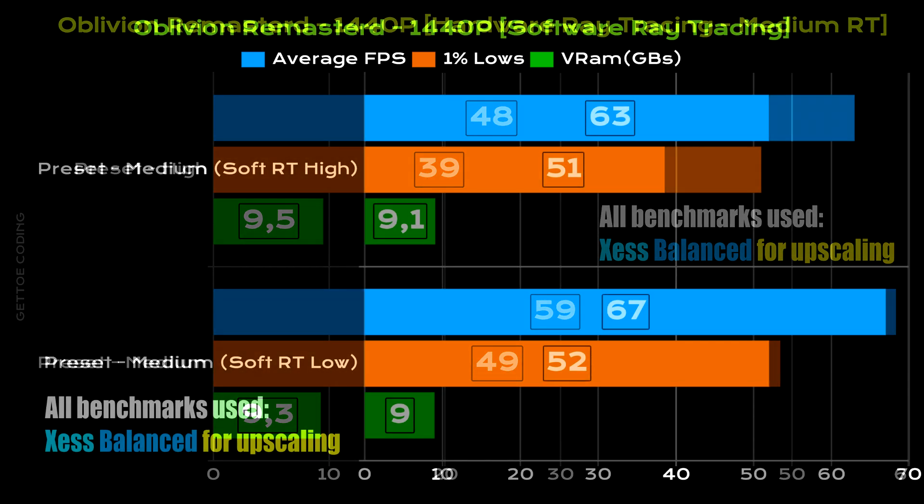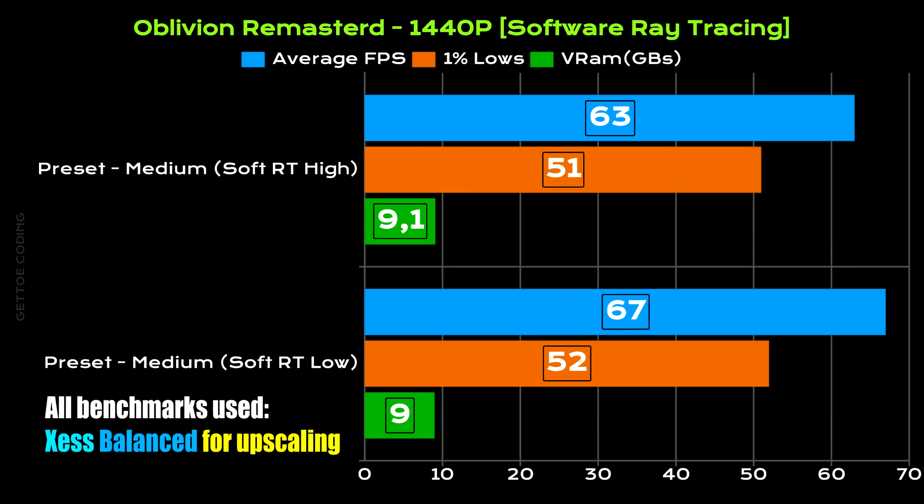Staying at 1440p, I wanted to see what software ray tracing looked like and any performance gains. Sticking with the medium graphical preset and jumping between high and low software ray tracing presets: at software ray tracing high, we maintained an average FPS of 63, with 1% lows at 51 and VRAM usage around 9.1 gigs. With the ray tracing preset set to low, average FPS increased to 67, 1% lows increased to 52, and VRAM was around 9 gigs — a bit of a bump there.